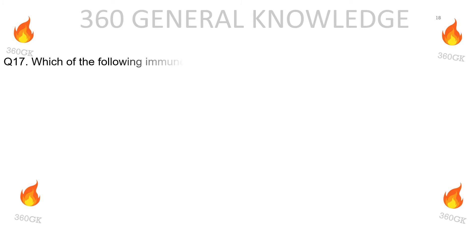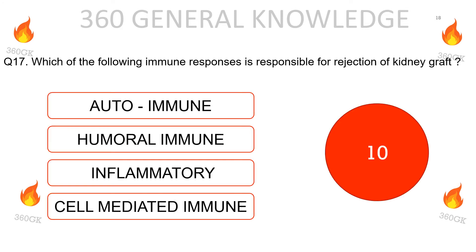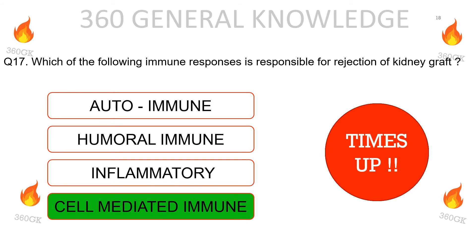Which of the following immune responses is responsible for rejection of a kidney graft: autoimmune, humoral immune, inflammatory, or cell-mediated immune? The correct answer is cell-mediated immune.